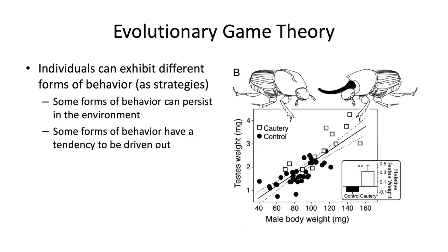Evolutionary game theory — what are we talking about? We're talking about the idea that individuals in a social network can exhibit different forms of behavior. The authors talk about beetles, but we are going to bring it right back to social networks in a later chapter. What we're doing here with evolutionary game theory is talking about the forms of behavior that are going to persist in the environment, and that some forms of behavior might have a tendency to be driven out.